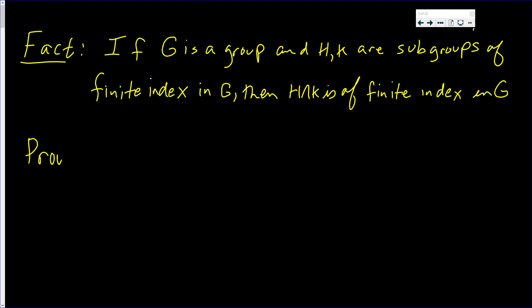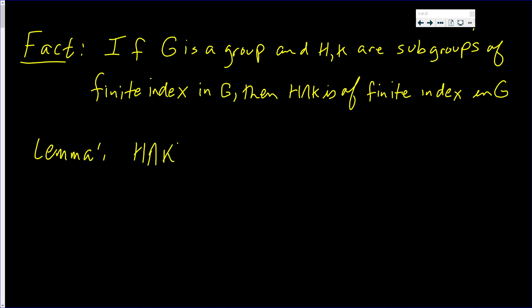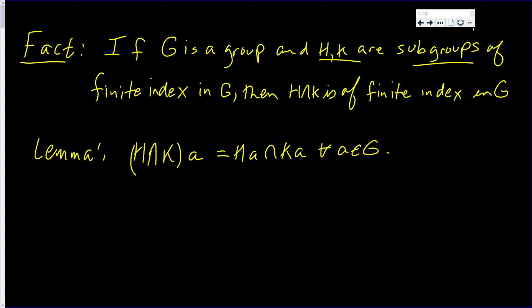Before we can prove this, we need to prove a lemma. The lemma states the following: H intersect K, since H and K are subgroups, H intersect K is a subgroup. The lemma says that (H intersect K) times A, where A is a member of G, equals HA intersect KA, and this holds for all A in G.